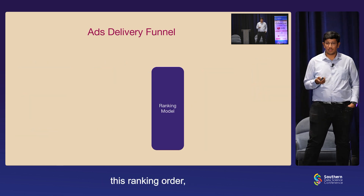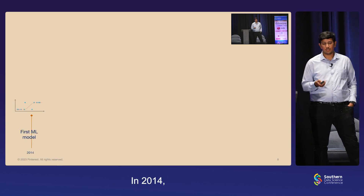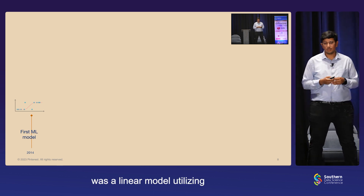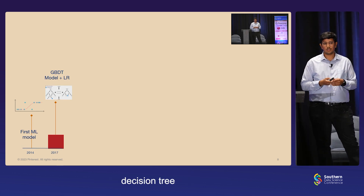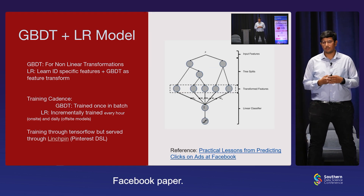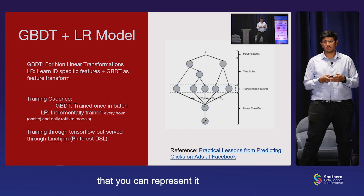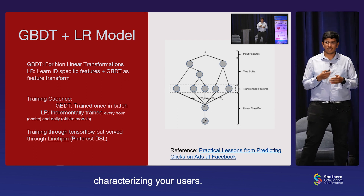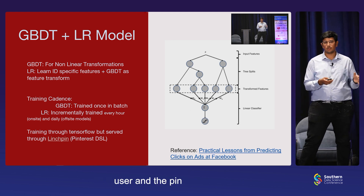The focus of this talk is this ranking model, which is catering to deliver precise predictions. In 2014, when the first machine learning models were being developed, the first model was a linear model utilizing logistic regression. To improve the expressive power of this model, we moved to a gradient boosted decision tree plus logistic regression based model — this architecture comes from a seminal Facebook paper. A context can be represented across four pillars: user features characterizing your users, pin features characterizing your content, interaction features between your user and the pin, or features characterizing the time of day or day of the week.